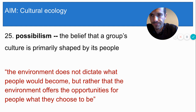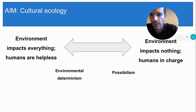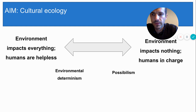To think about these two theories, imagine that we measured the impact of the environment on culture as a spectrum. On one end of the spectrum, the environment shapes everything and humans have no free will. On the other end, the environment plays no role and humans are completely in charge of their destiny. Followers of environmental determinism are closer to the left side, while followers of possibilism are closer to the right. So this debate is really over the extent to which the environment impacts humans.